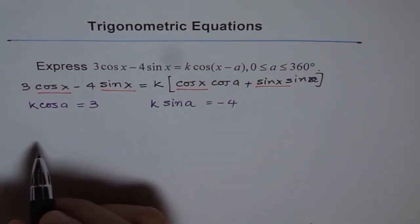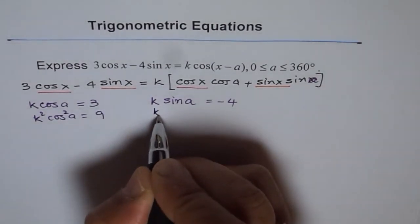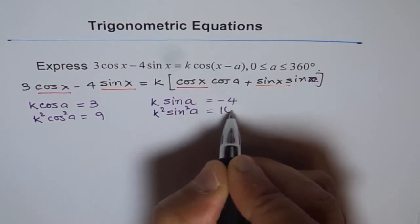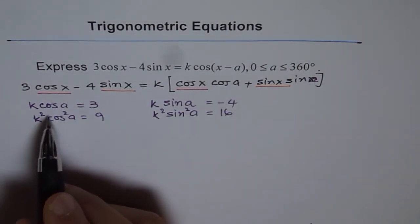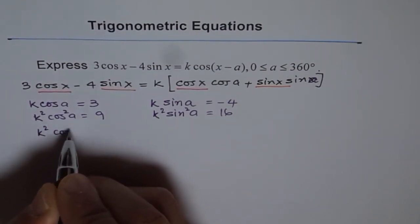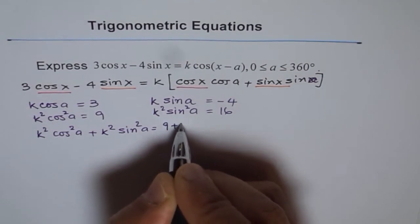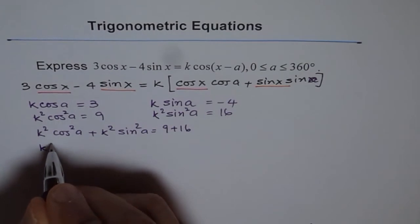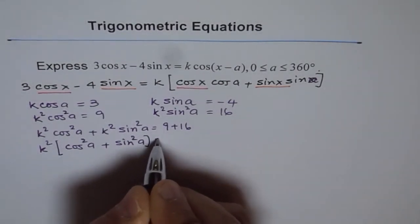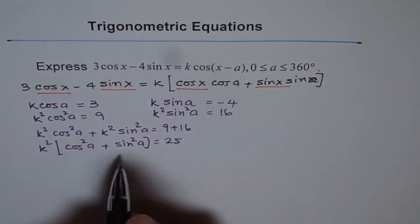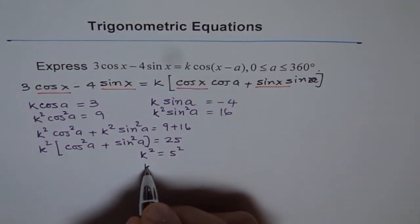Now let's square both sides and add them up. If we square, let's do it in steps. We get k² cos² a equals 9, and k² sin² a equals 16. If we add them, we get k² cos² a plus k² sin² a equals 9 plus 16. We can take k² common and we are left with cos² a plus sin² a equals 25. Now cos² a plus sin² a is 1, therefore k² equals 25, and so k equals 5.